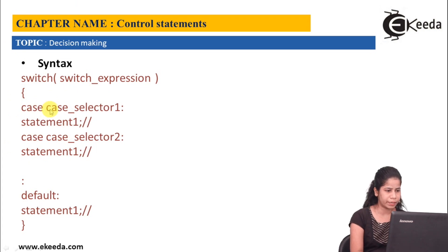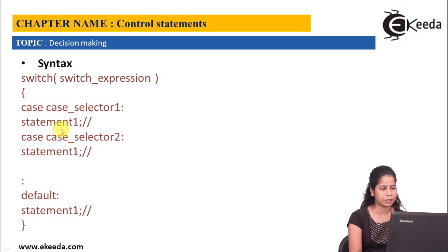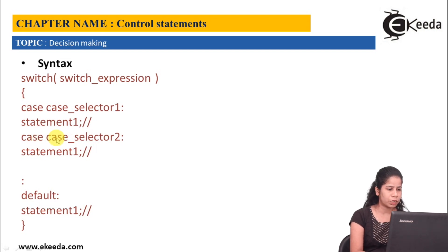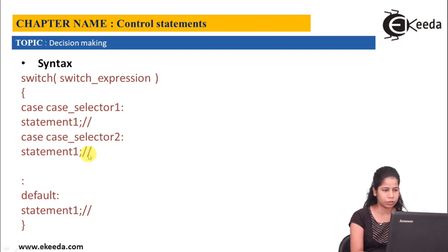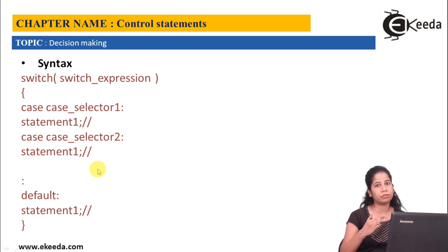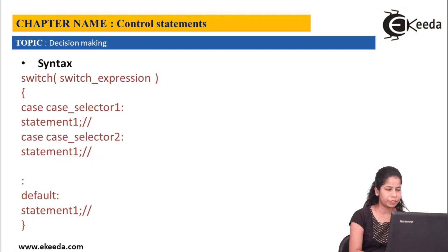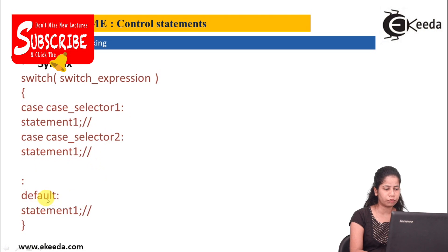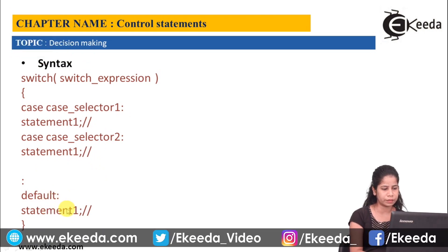Here we have case selector 1. If that is matched with the switch expression, then statement 1 will get executed. Normally after that I would have a break statement, but now there is no break statement. So it is going to check the second case also. If this case selector is matching with the switch expression, then this statement will get executed. Again there is no break, so all the cases are going to be checked against the case selector value — even if there is a match in the first case itself. At the end it will go to default and execute the default statement also.